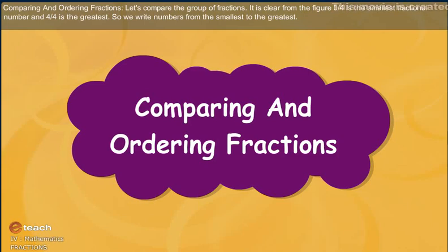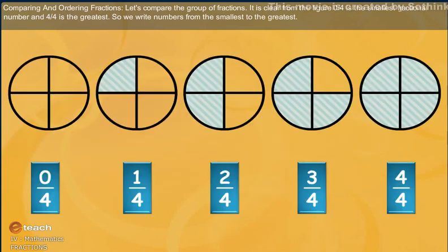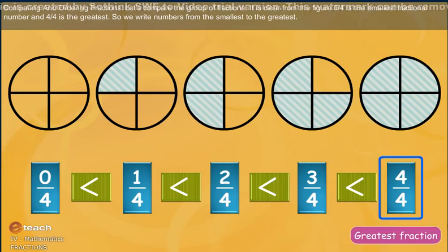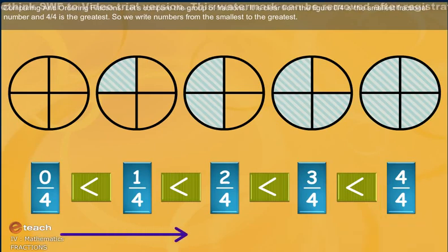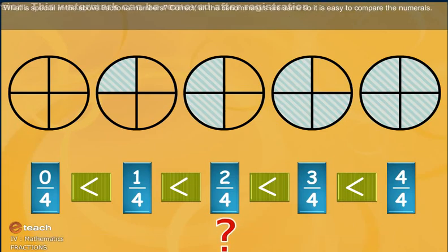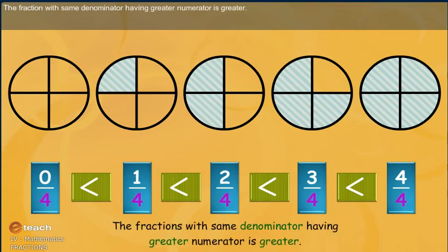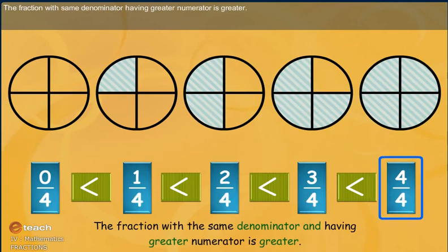Comparing and ordering fractions. Let's compare a group of fractions. It is clear from the figure that zero by four is the smallest fractional number and four by four is the greatest. So we write from smallest to greatest. All the denominators are the same, so it is easy to compare the numerators. The fraction with the same denominator having a greater numerator is greater.